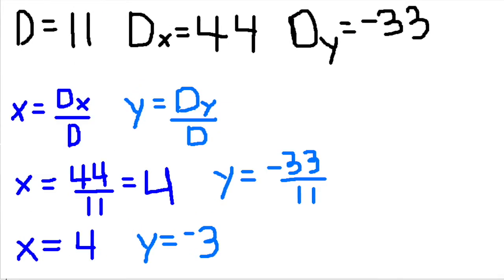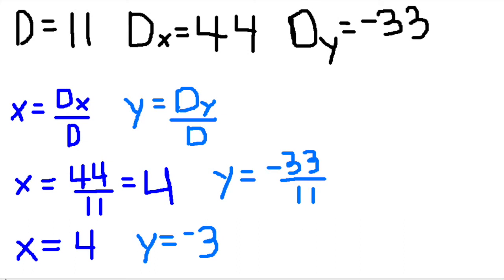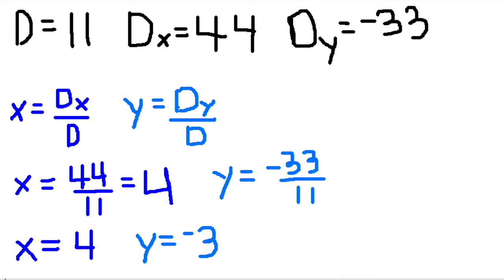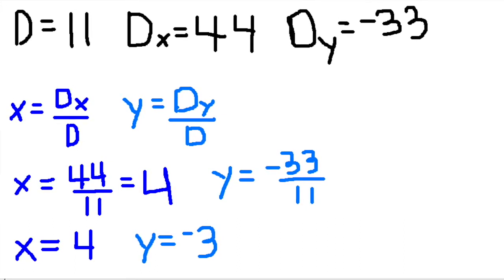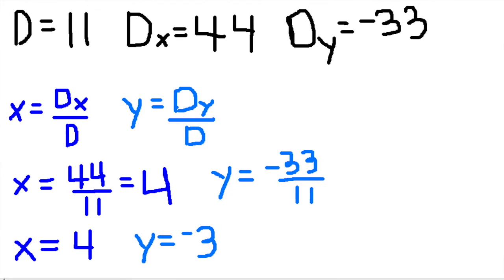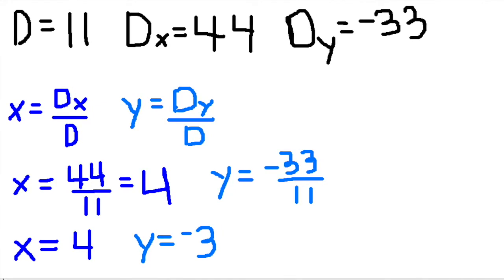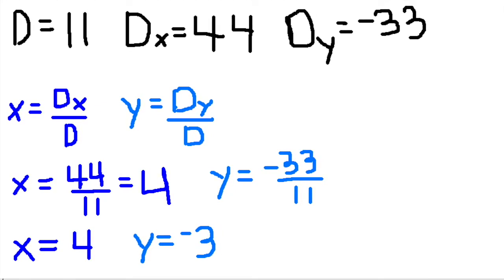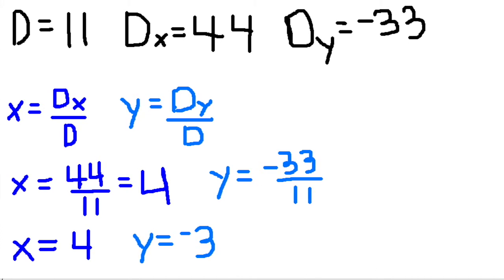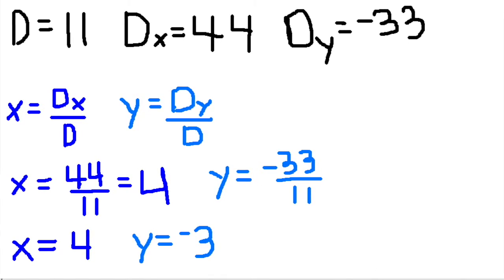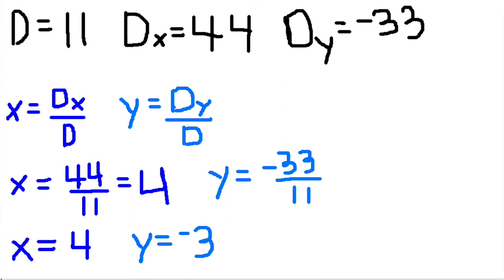The equations to find x and y are: dx over d equals x, and y equals dy over d. So x equals 44 over 11, and y equals negative 33 over 11. This gets you x equals 4 and y equals negative 3.